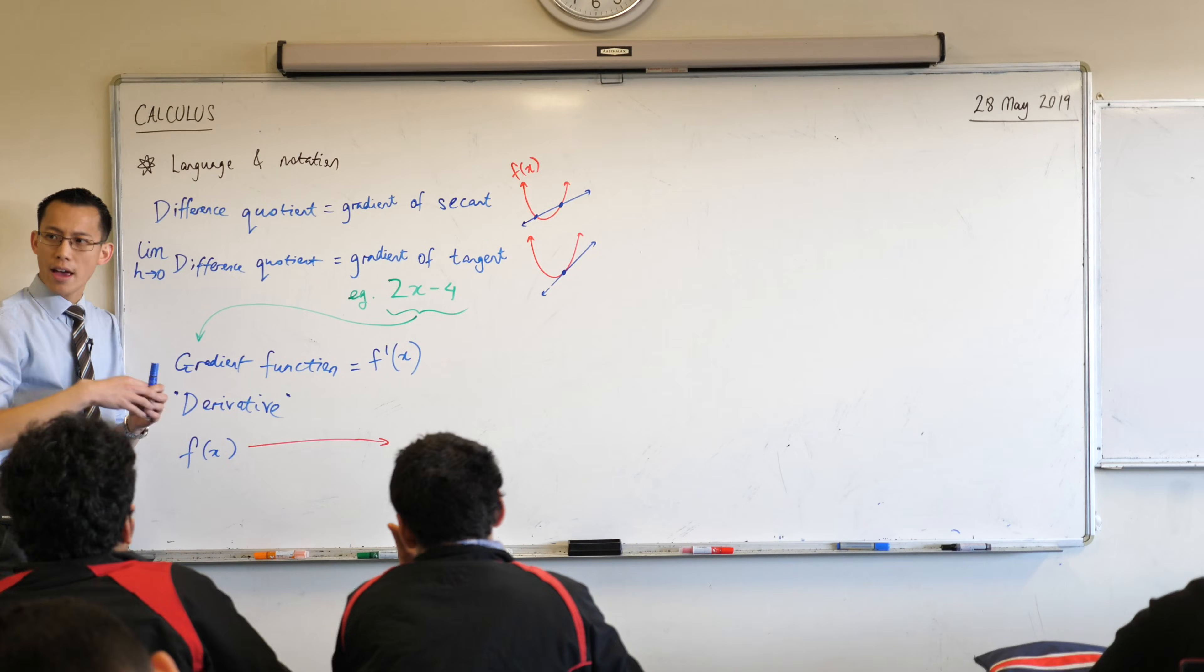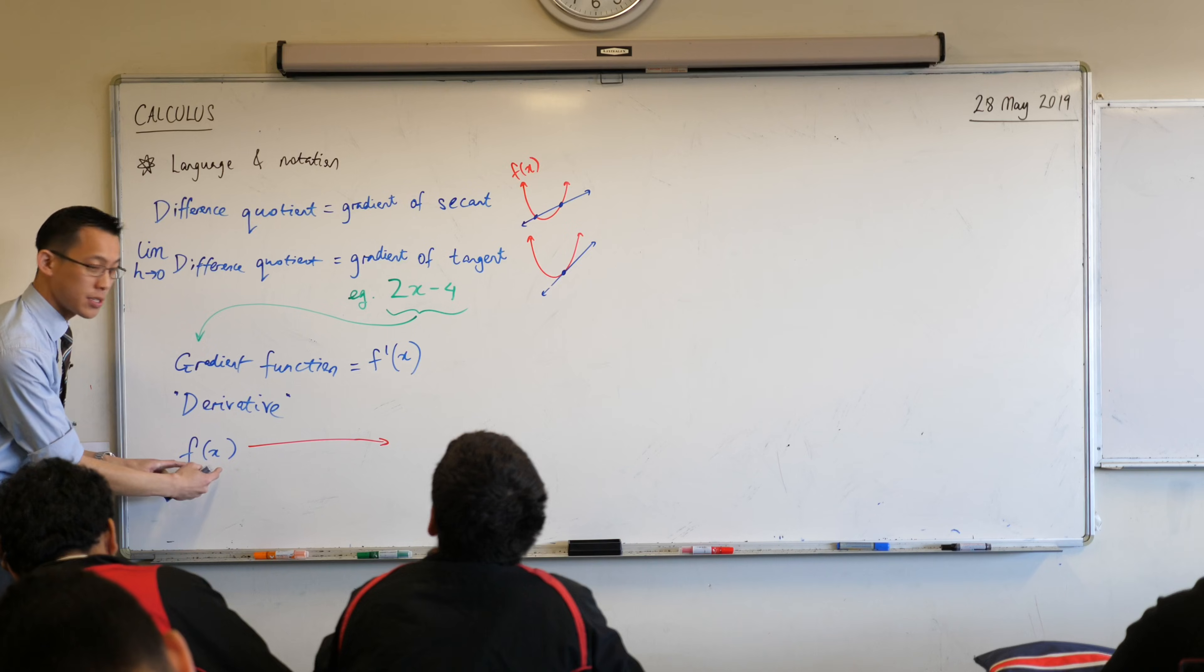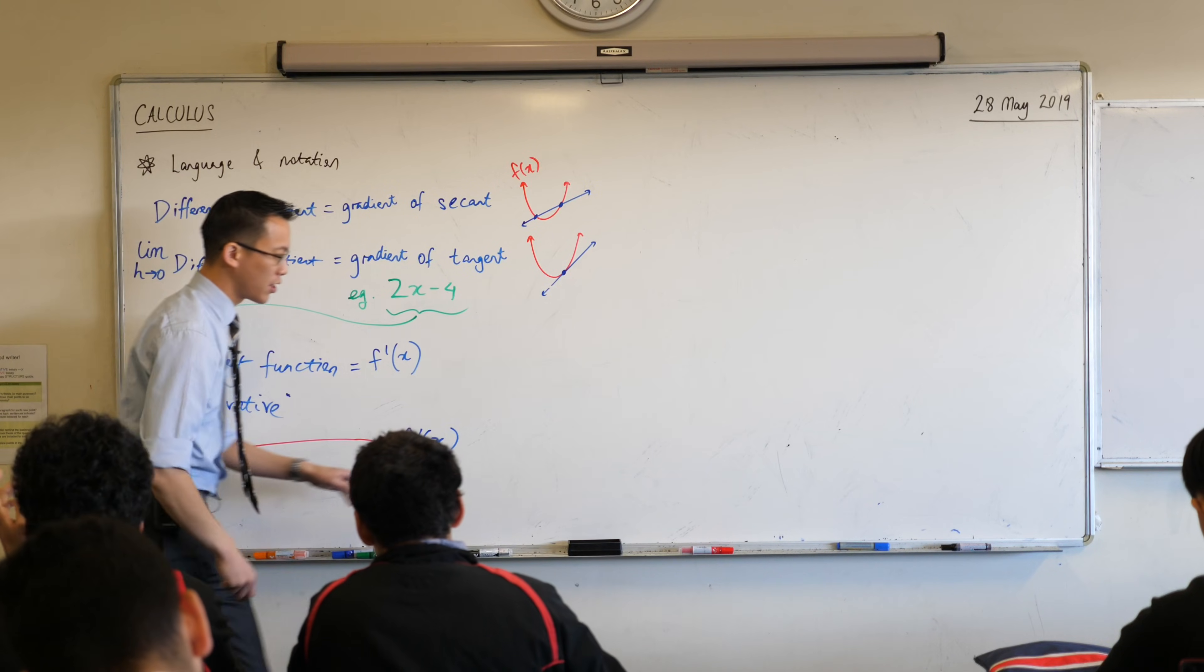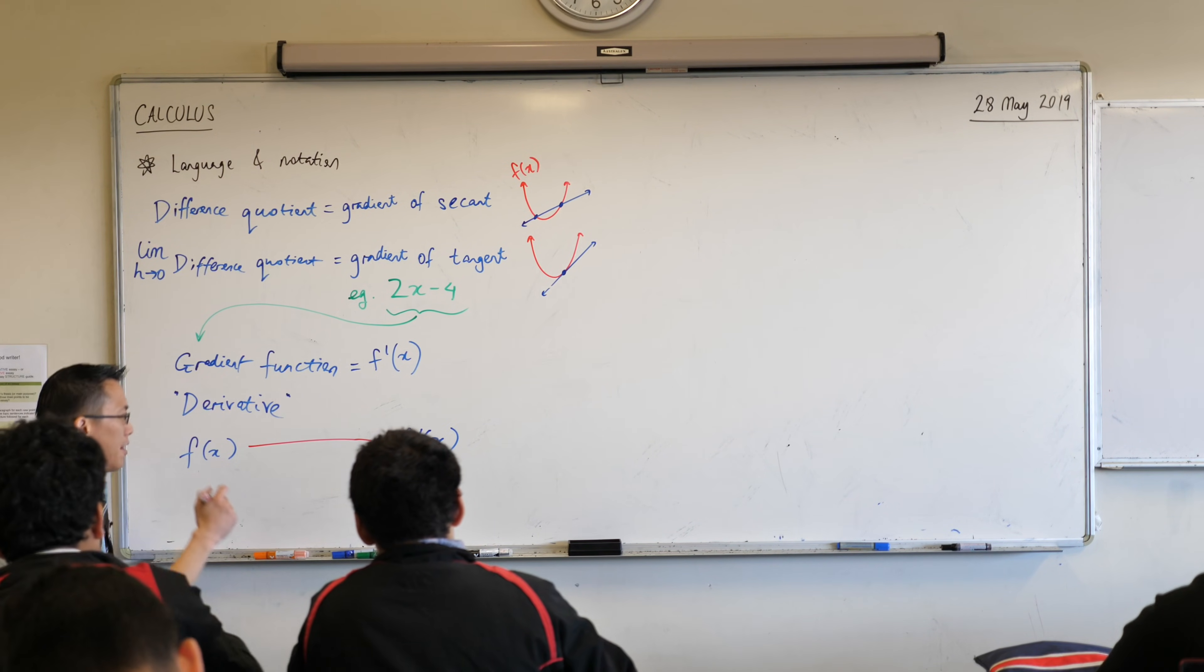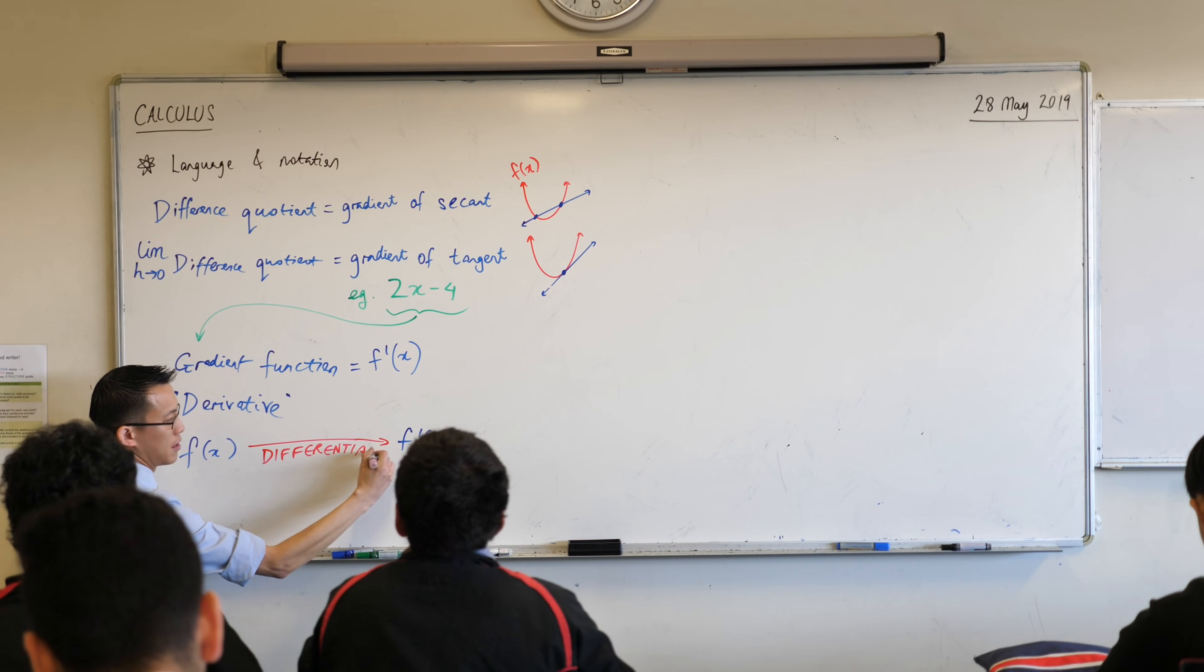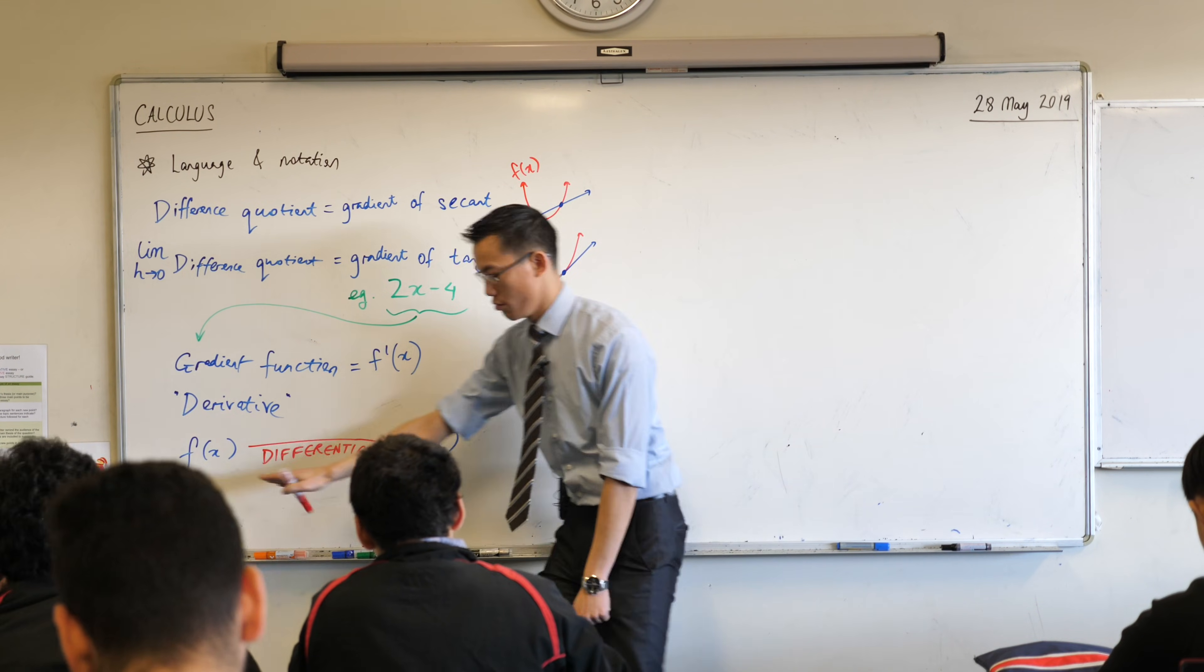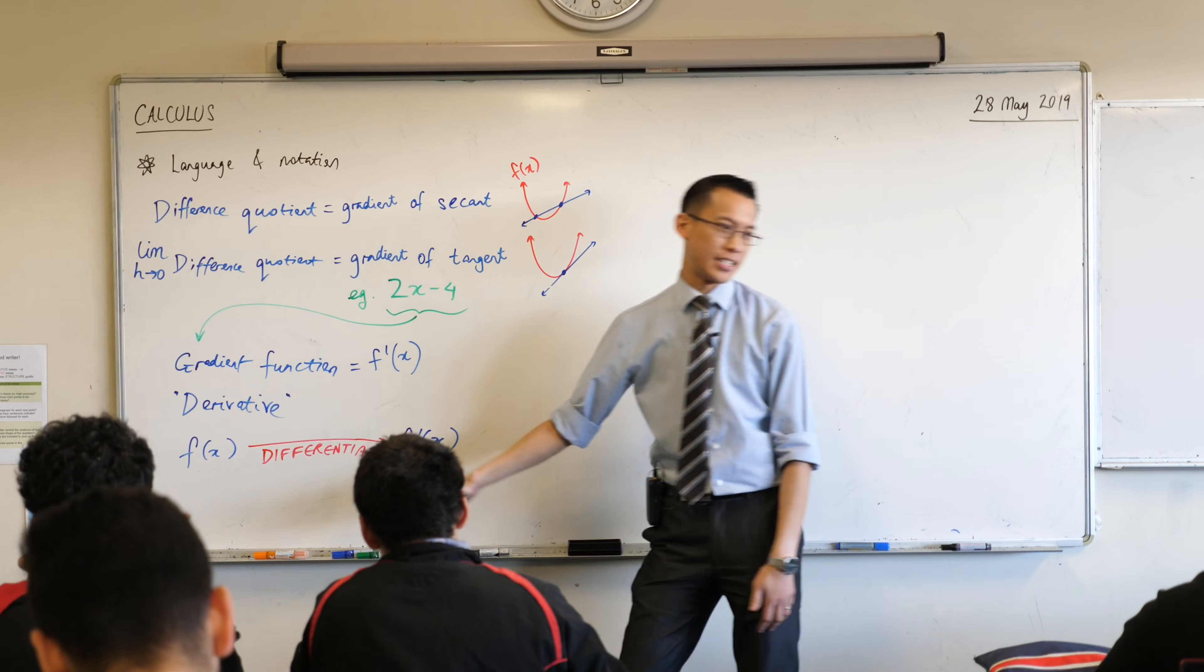It's about trying to calculate how fast is something changing, moving from something to something different, okay? So, the process of going from your original function to your derivative, like getting to that thing, because it's all about this difference question thing, that's where we started. This process of going from your original function to what's the gradient function, what's the derivative?